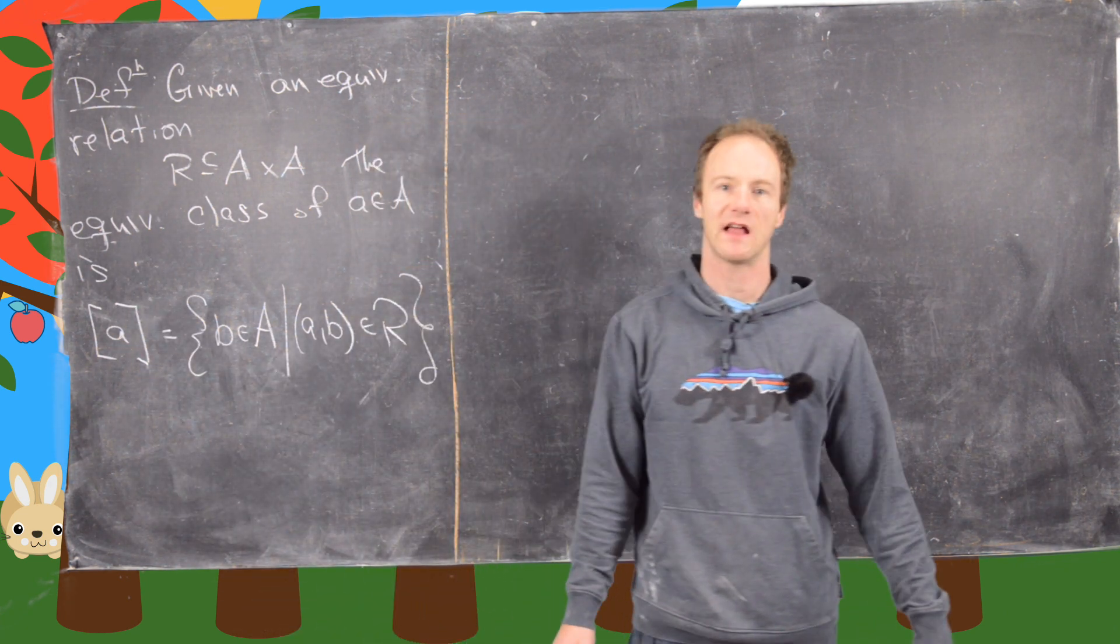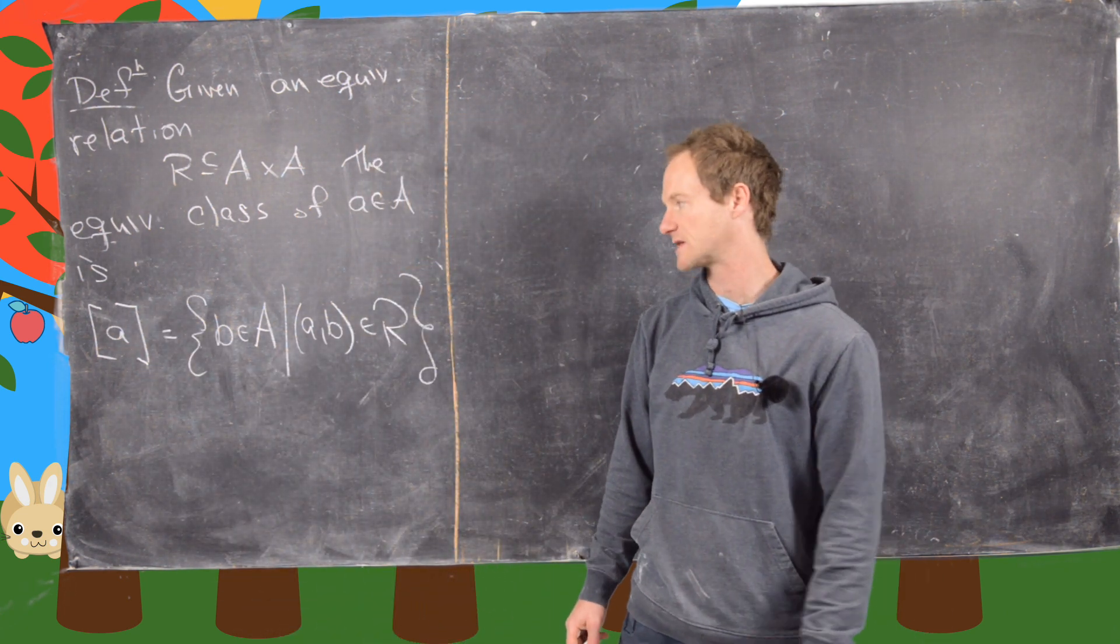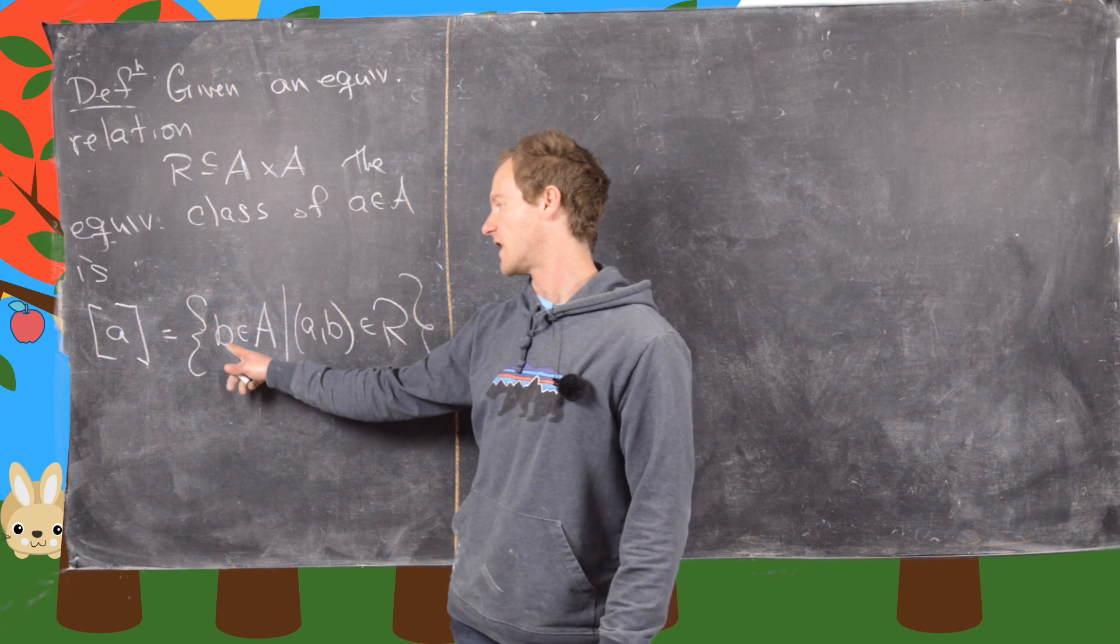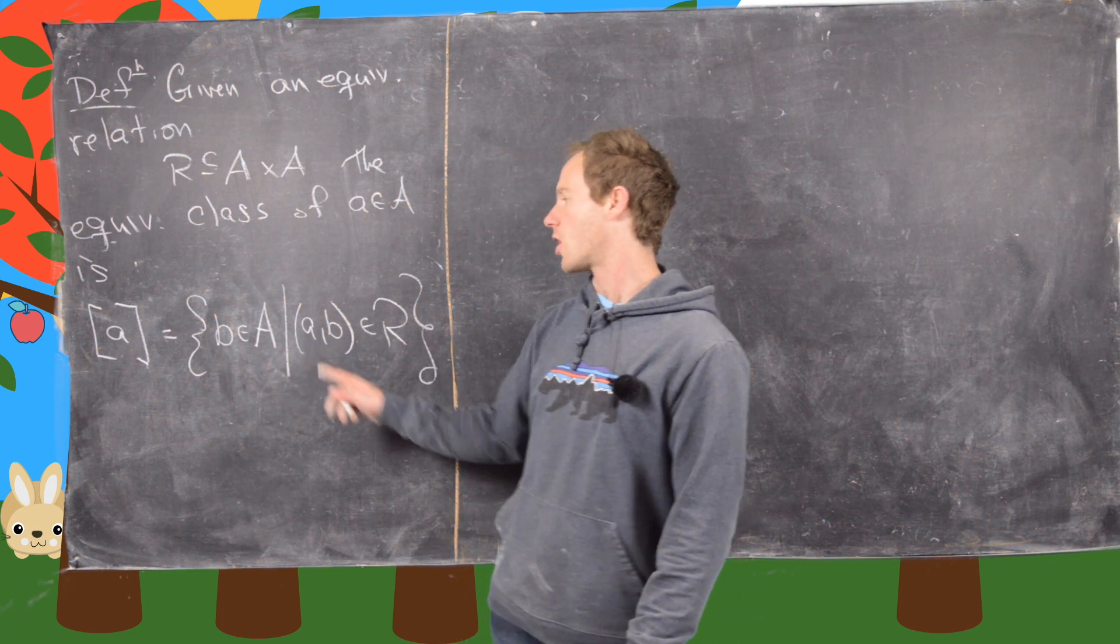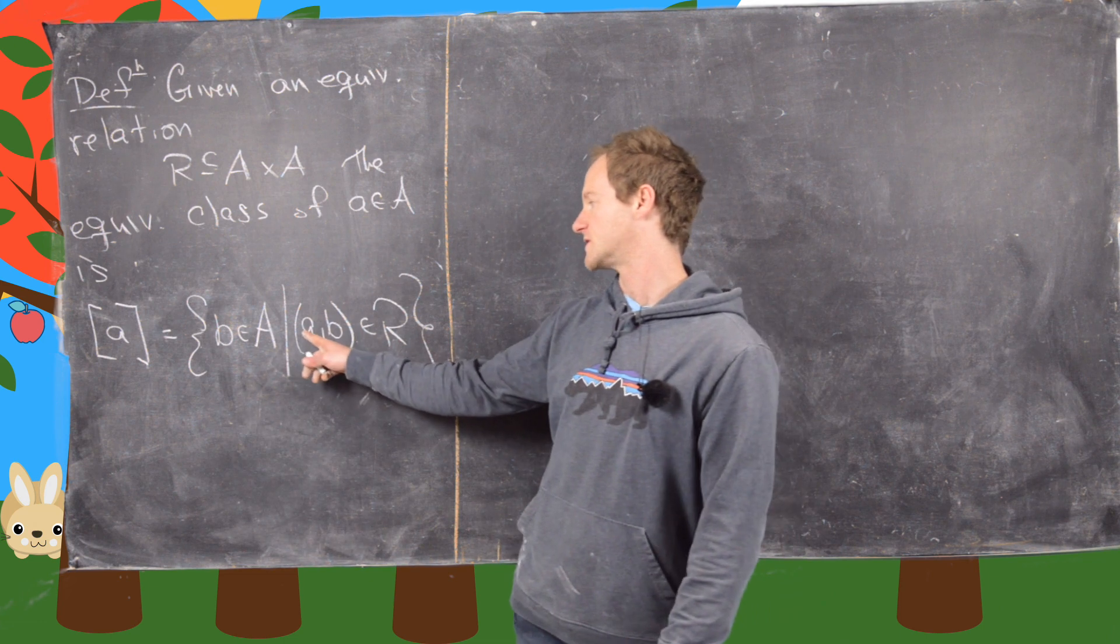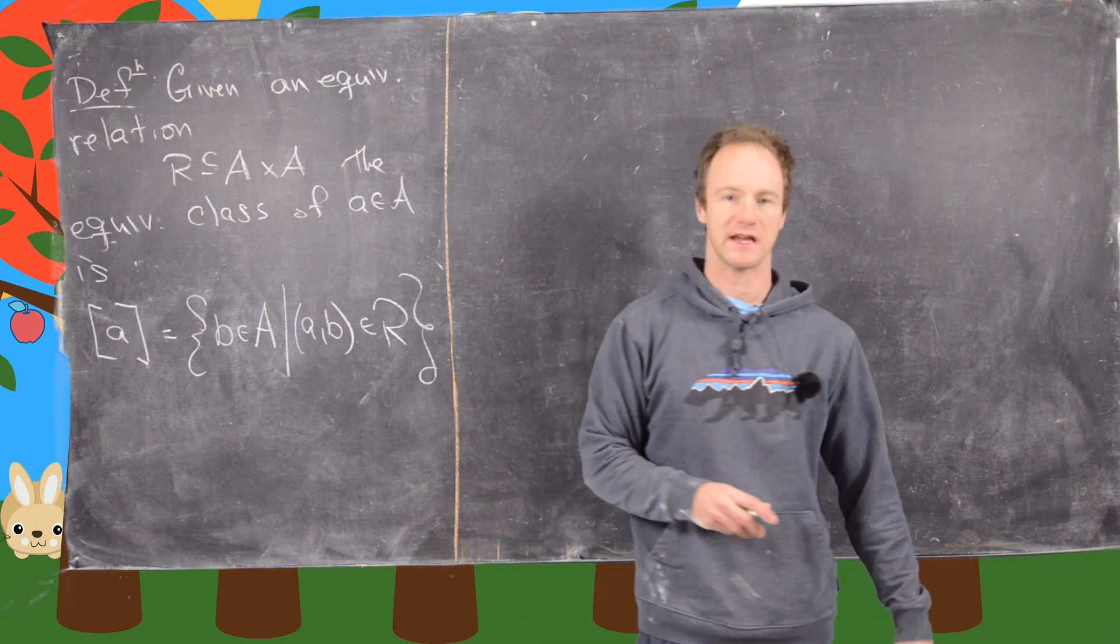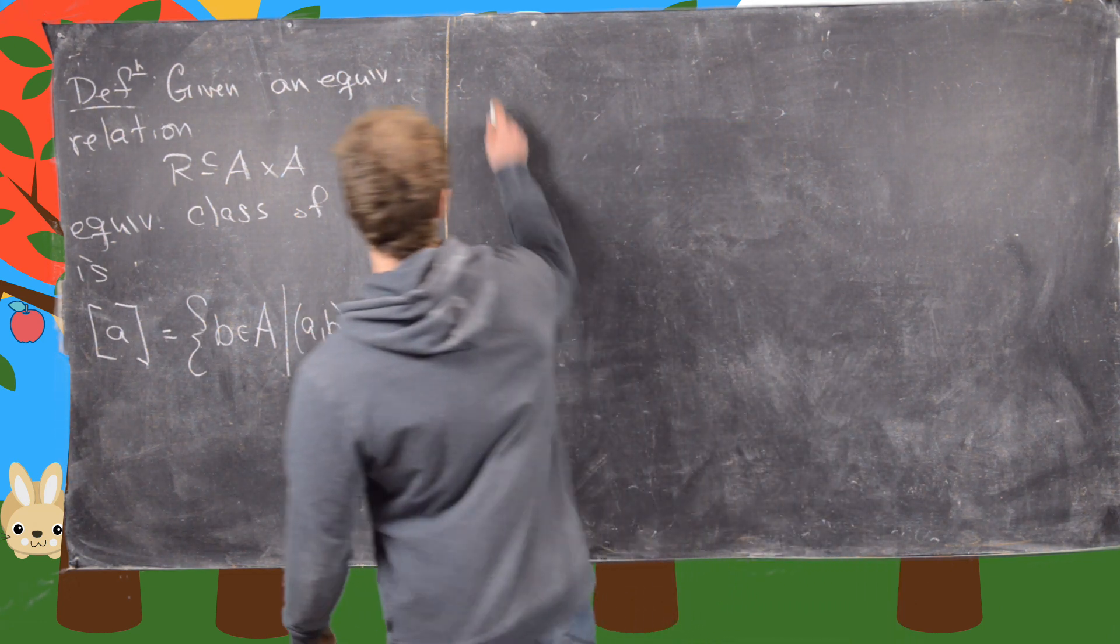The equivalence class of an element A in A is given by the following. So we usually put brackets around this element A to mean the equivalence class. And this is all of the elements B in A that are related to A. So in other words, the ordered pair A comma B is in R. So let's look at some examples.